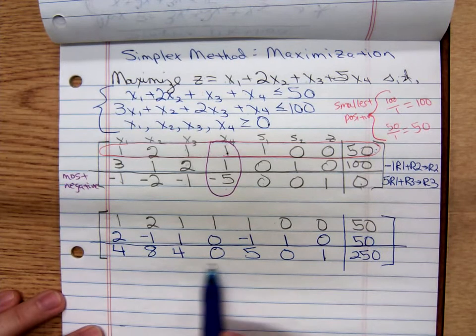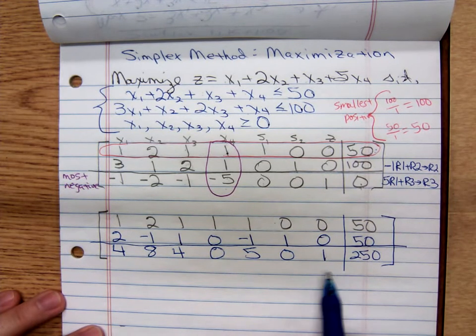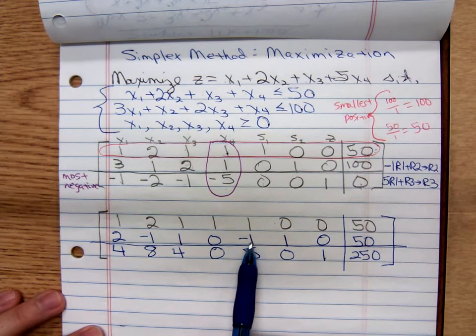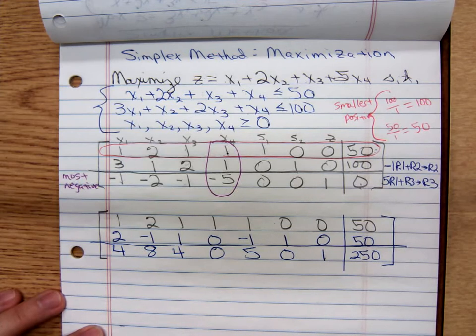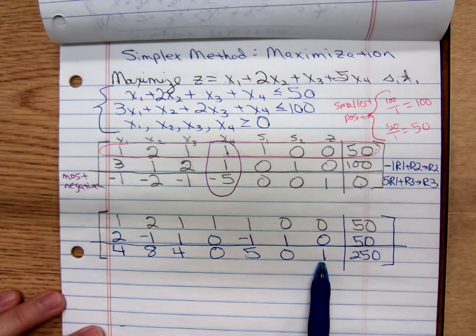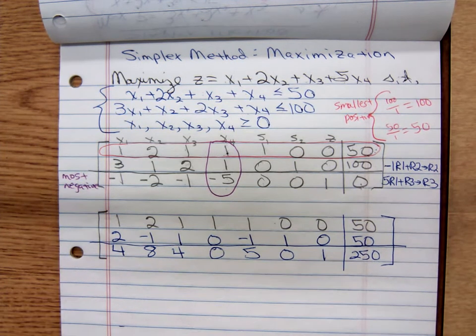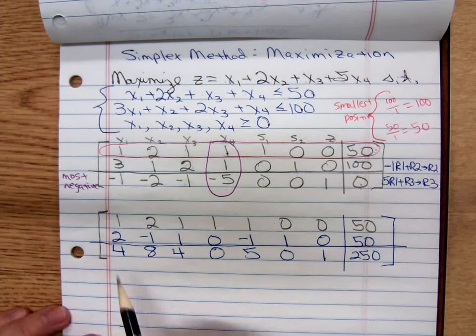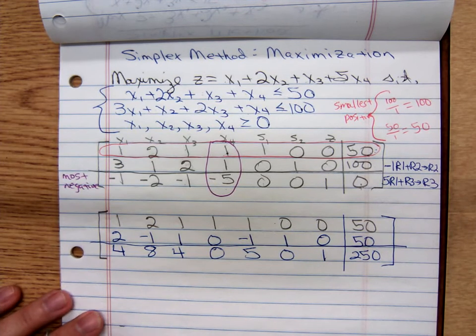There are no negative numbers remaining on the last row. Once again, you can have negative numbers appearing in the matrix. You just can't have them in the last row. There are no negative numbers remaining in the last row. So we know that we found the maximum value.